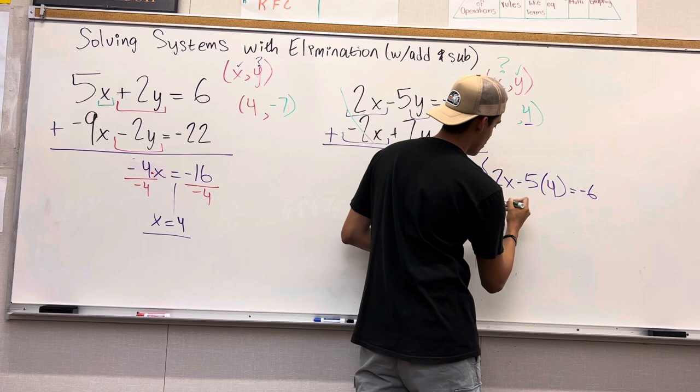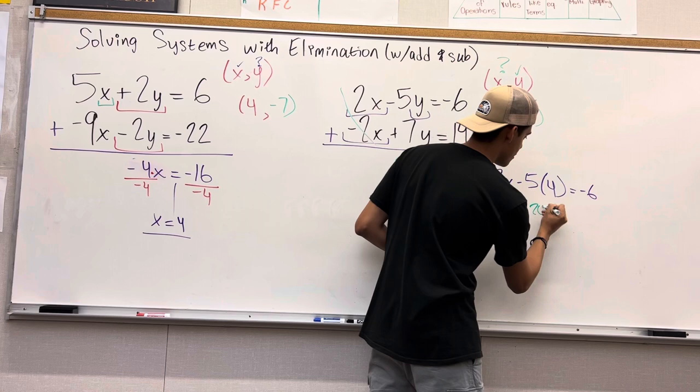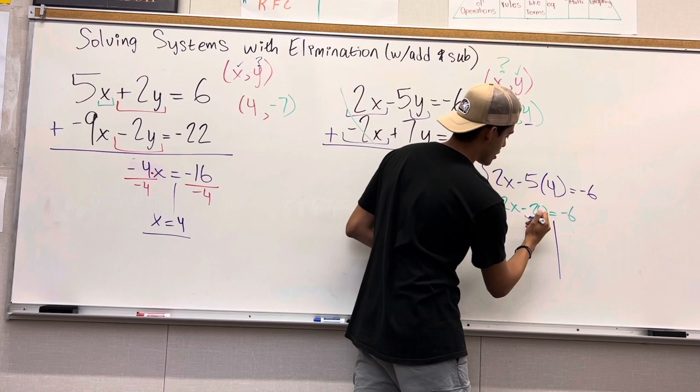Now, we can solve it. 2x, let's simplify it. Negative 5 times 4 would give you negative 20 equals negative 6. You are going to add 20 to both sides because we want to leave x by itself. This turns into 0.